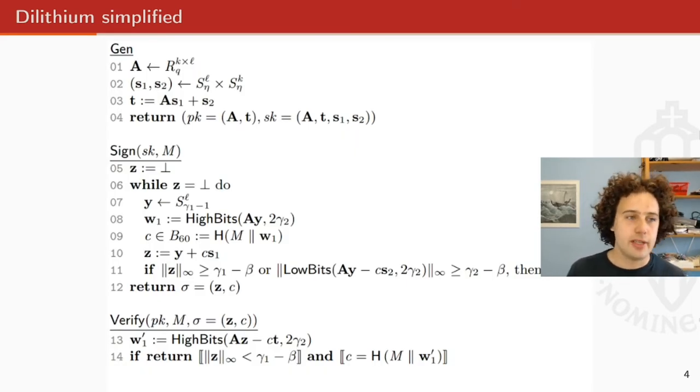So the signature scheme itself obviously has three parts, the key generation, the signature, and the verification. This is how it looks. I won't go into it too much, but the most important thing is that all these bold characters are vectors and matrices. Most of the involved operations in this scheme are vector and matrix multiplications. And as such, the scheme uses the NTT a lot.